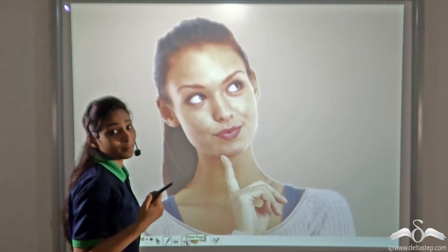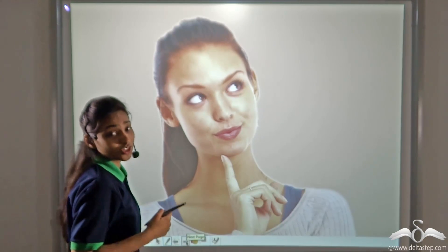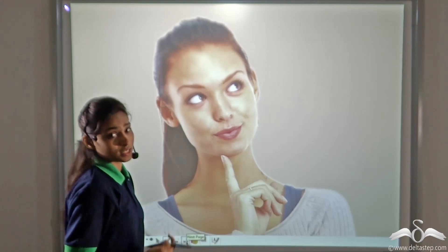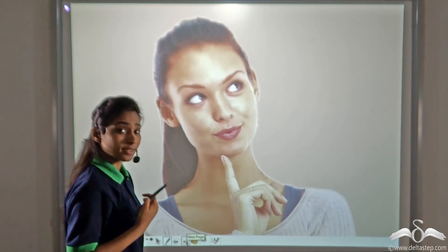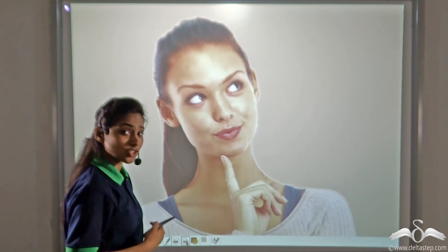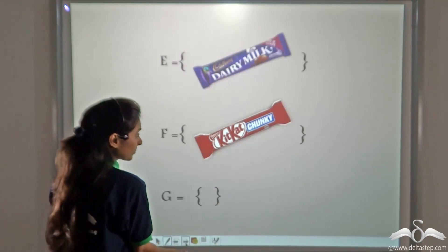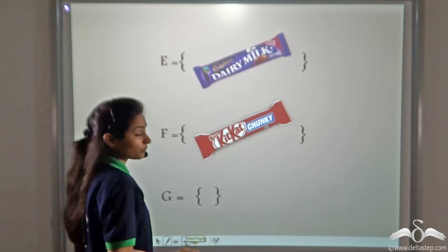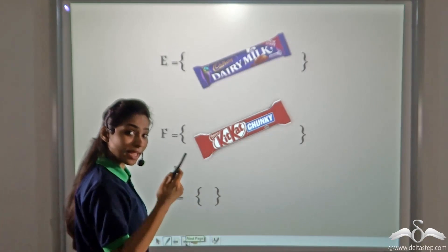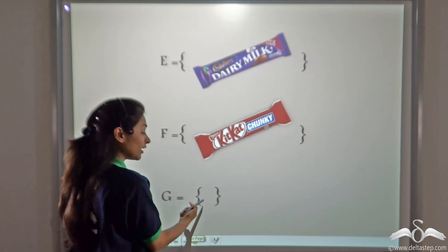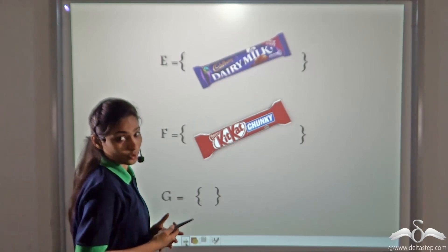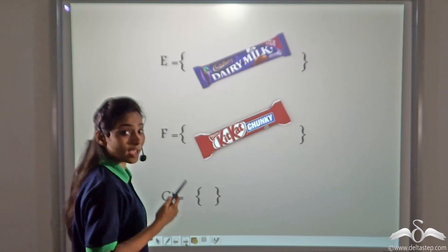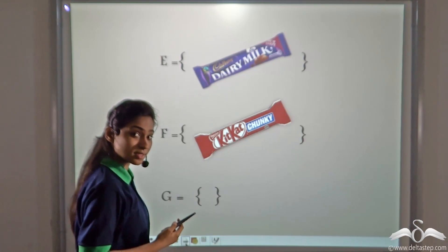After some time my mother decreased my happiness. She said that I have to give at least one chocolate to my little sister. So again I started thinking about the ways I could eat the chocolates.